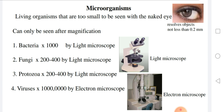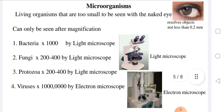Bacteria have to be magnified one thousand times to be seen by the light microscope. Fungi and protozoa have to be magnified from 200 to 400 times to be seen by the light microscope. Viruses have to be magnified one million times to be seen by the electron microscope.